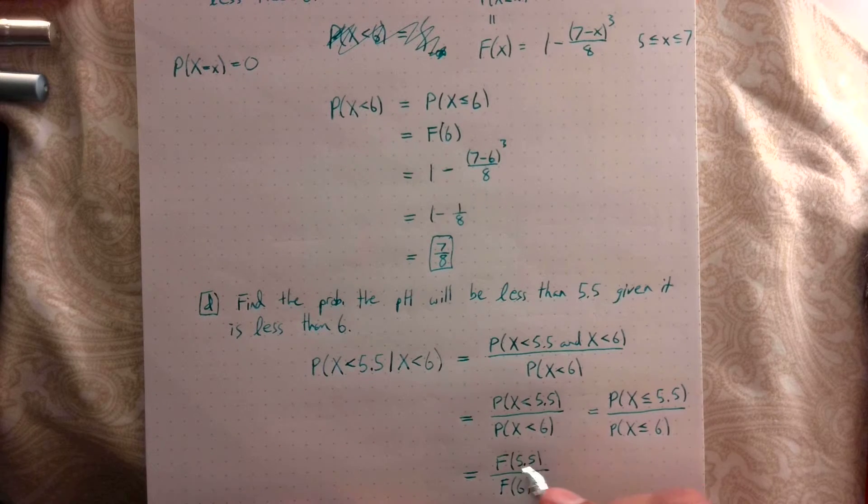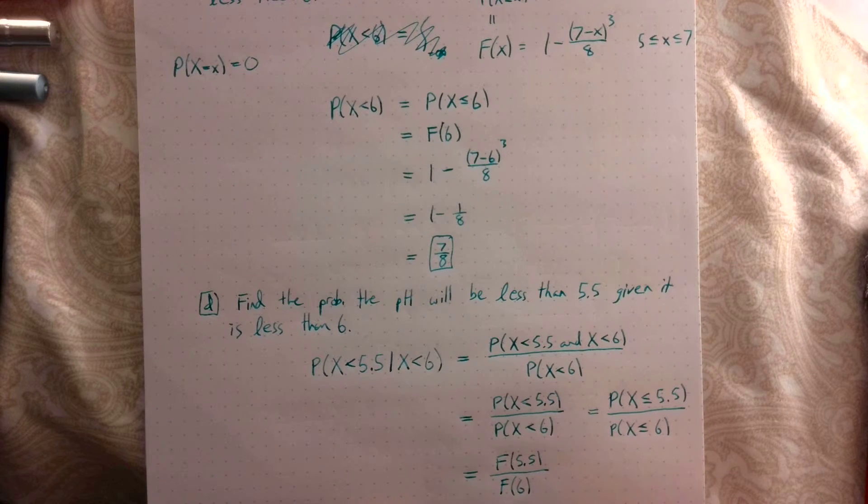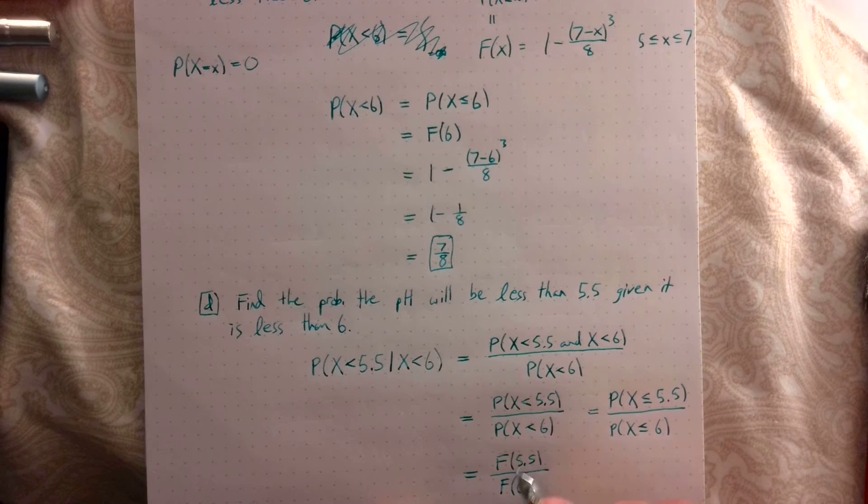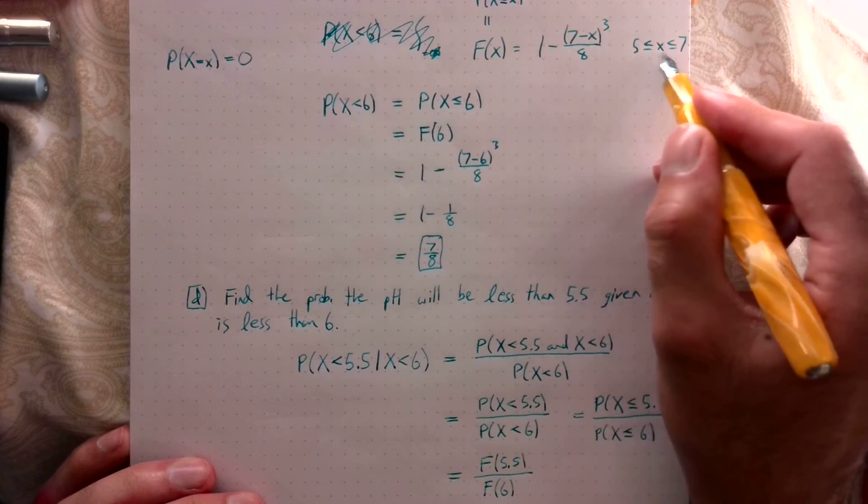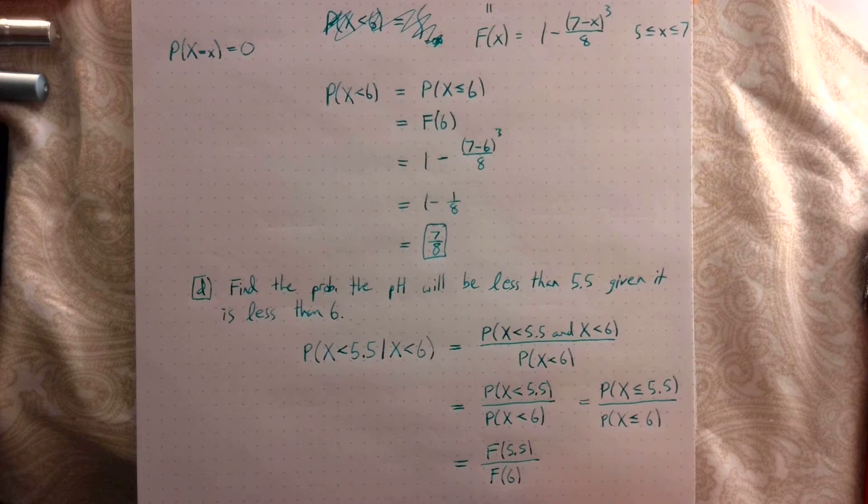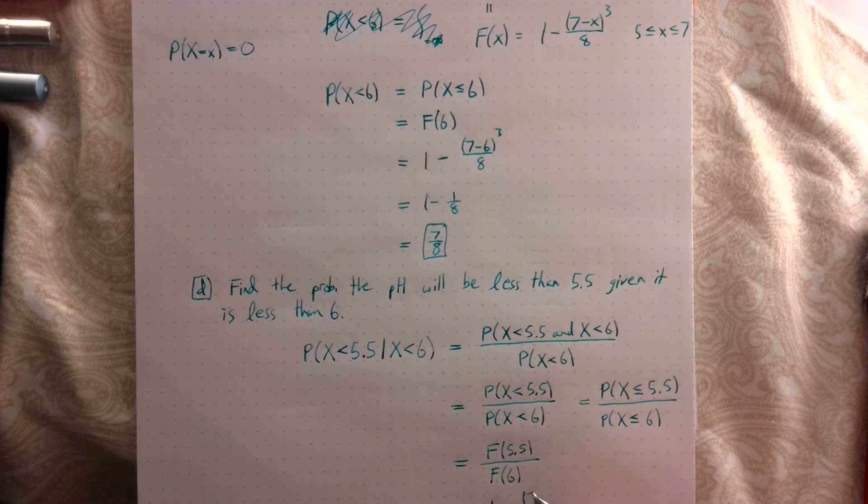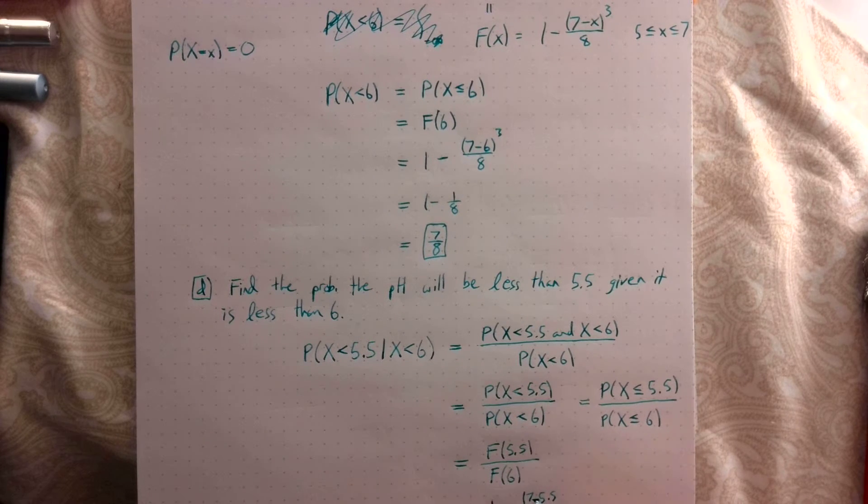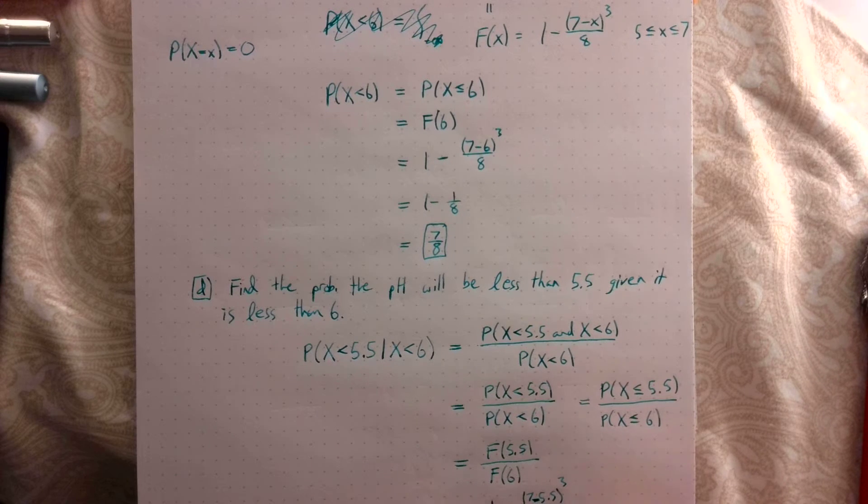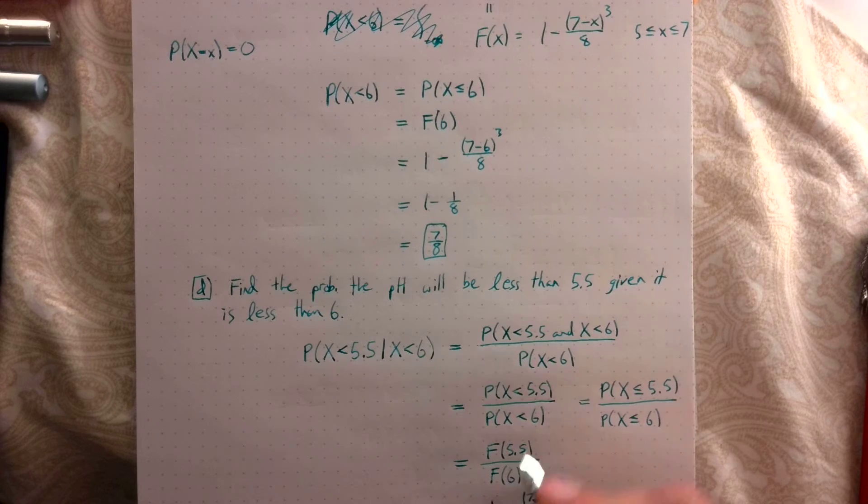So now what's left is plugging this in. We're in the case of the CDF, so we just plug in 5.5. This is 1 minus (7 minus 5.5) cubed over 8, divided by F(6), which we already found was 7/8.